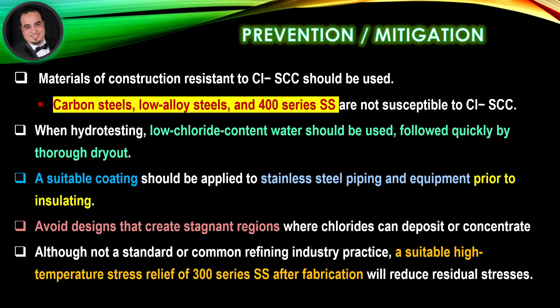Prevention and mitigation: Materials of construction resistant to chloride stress corrosion cracking should be used. Carbon steels, low alloy steels, and 400 series stainless steel are not susceptible to chloride stress corrosion cracking. When hydro testing, low chloride content water should be used, followed quickly by thorough dry out. A suitable coating should be applied to stainless steel piping and equipment prior to insulating. Avoid designs that create stagnant regions where chlorides can deposit or concentrate.